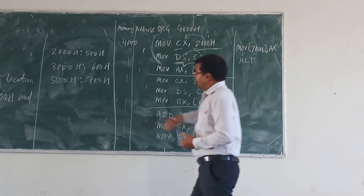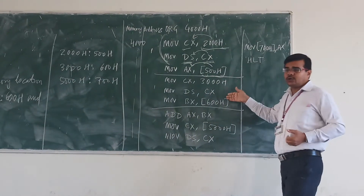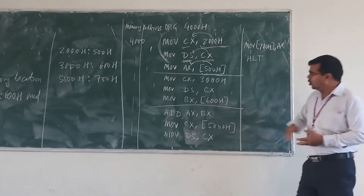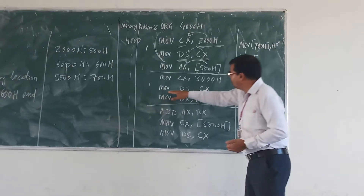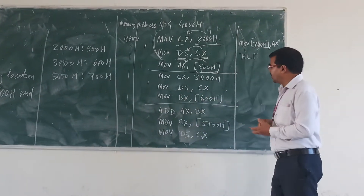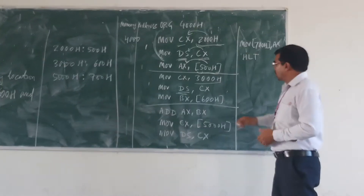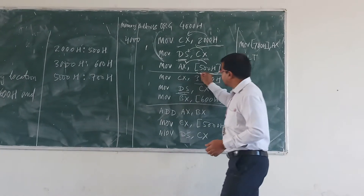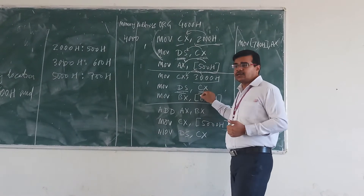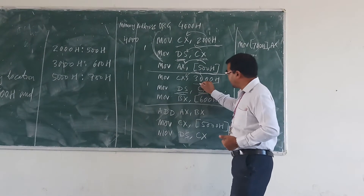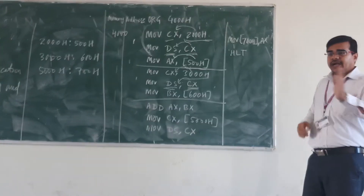The second data is at a different segment register, 3000h, so we need to initialize it again. MOV CX, 3000h. MOV DS, CX. So 3000h is copied to the CX register, and then that value is assigned to the segment register DS.